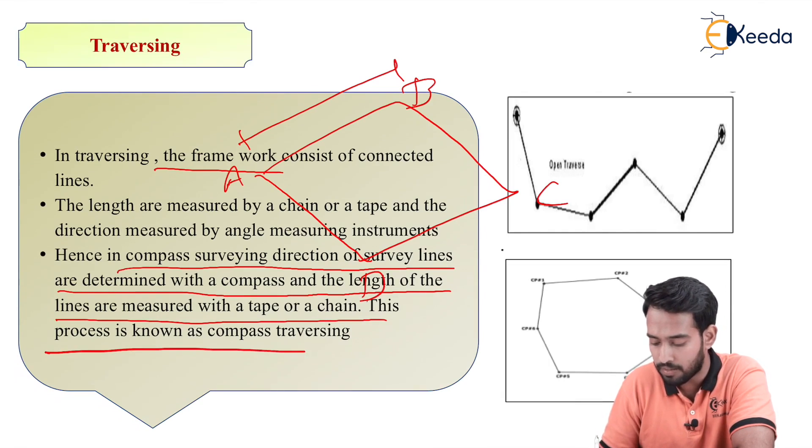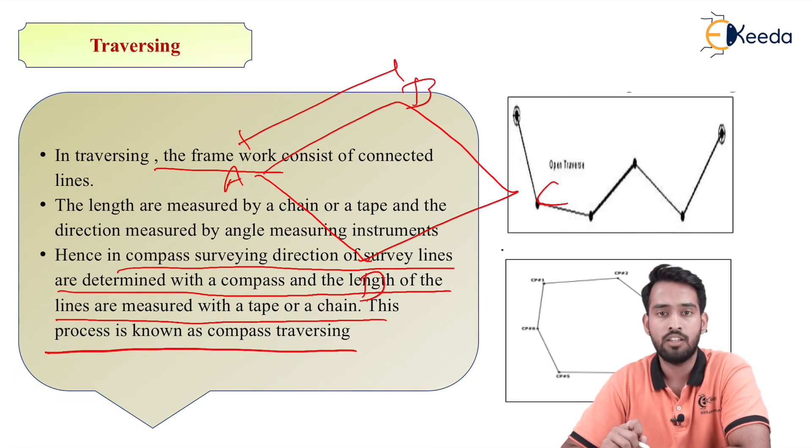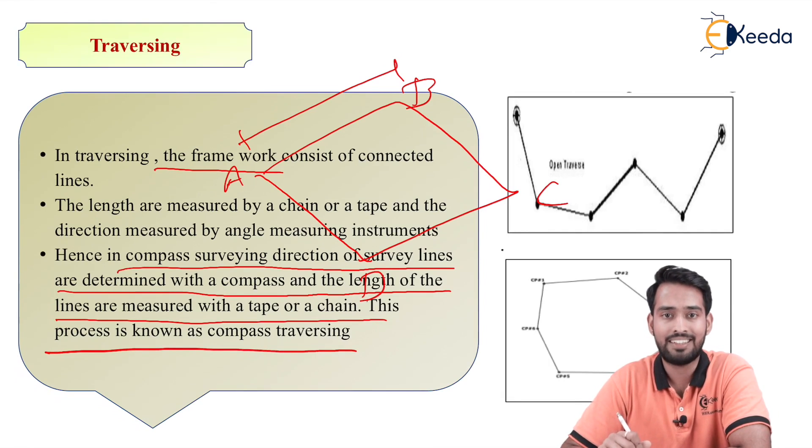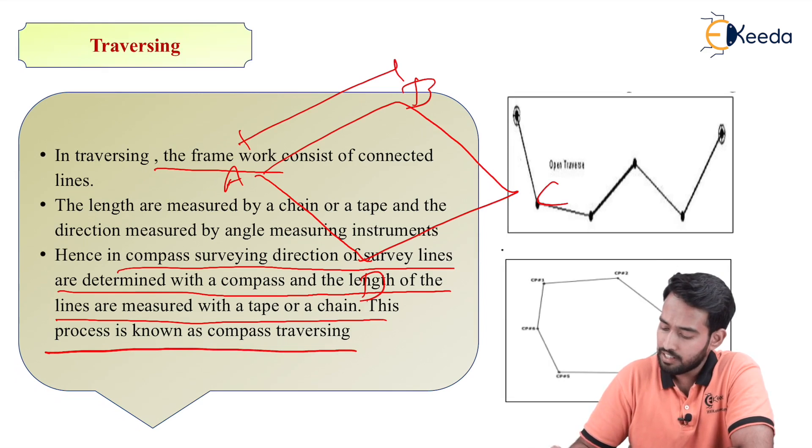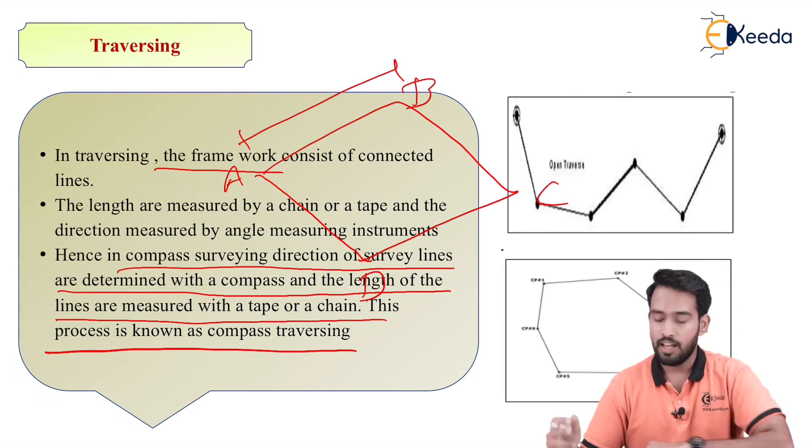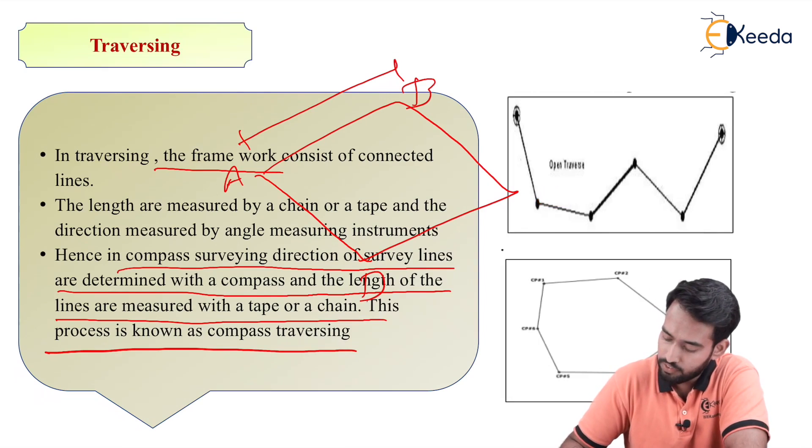So this process of measuring with chain or tape and the directions by using compass is known as traversing. Now if we can see in these figures provided over here, there are two types of compass.